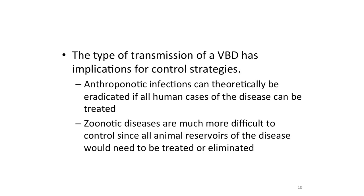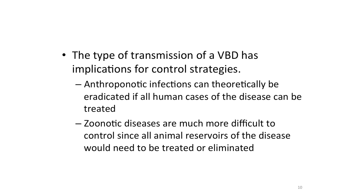The type of transmission of the disease has implications for control. For human anthroponotic infections, these can be eradicated if you can treat all cases of disease in humans. With zoonotic diseases, it is difficult to control because there is an animal reservoir, unless you get all the animals treated or eliminated.